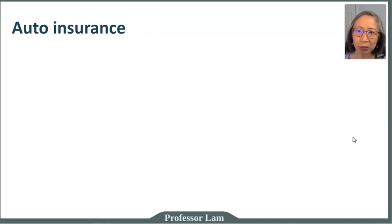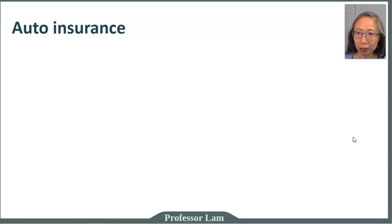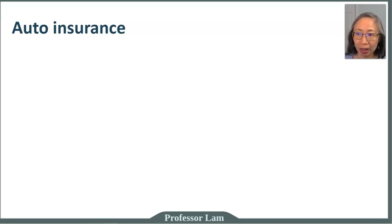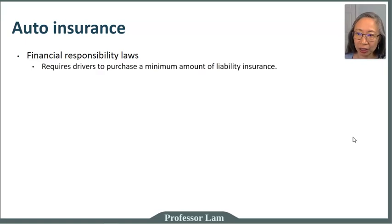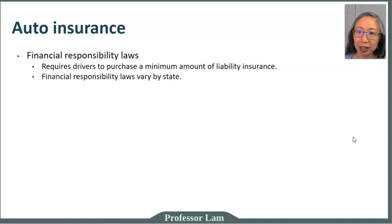Now let's look in more detail at the first type of property insurance, which is automobile insurance. Remember that insurance laws are governed by states, so there are no uniform federal laws in the U.S. that govern all automobile insurance. Each state's requirements and regulations are very different. Most states have some kind of financial responsibility laws, and the purpose of these laws is to require drivers to purchase a minimum amount of liability insurance. Again, that varies state by state.